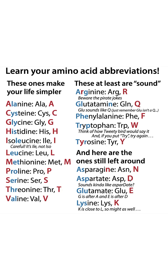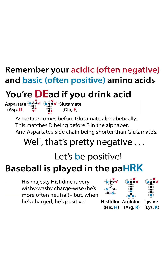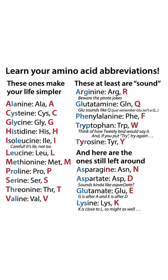The acidic amino acids are D and E, some of the leftovers. Remember that aspartate comes before glutamate in the alphabet, so aspartate gets the D and glutamate gets the E. Aspartate's side chain is shorter than glutamate's. Lysine — K is close to L, so might as well.